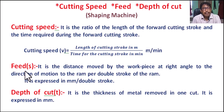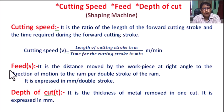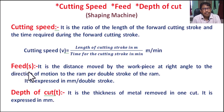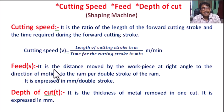What is feed? Feed is the relative movement of the tool or workpiece in a direction perpendicular to the axis of the reciprocating ram, per double stroke. Selection of feed depends upon the kind of metal, type of job, etc. So feed is the distance moved by the workpiece at right angles to the direction of motion.